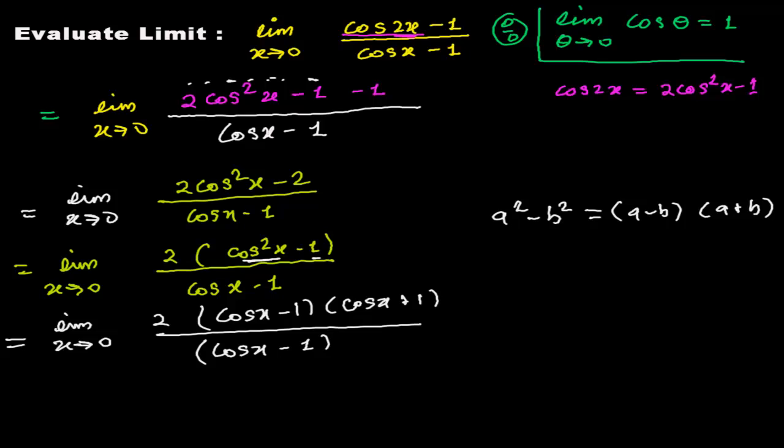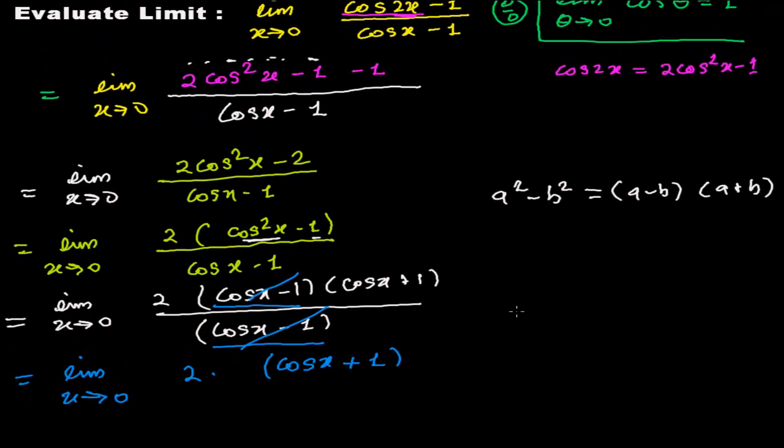So here what are you getting? Just look at this. Yes, see cos x minus 1 and cos x minus 1, both are the same, so you can easily cancel out each other. And you're going to get your limit x tends to 0, 2 times cos x plus 1.